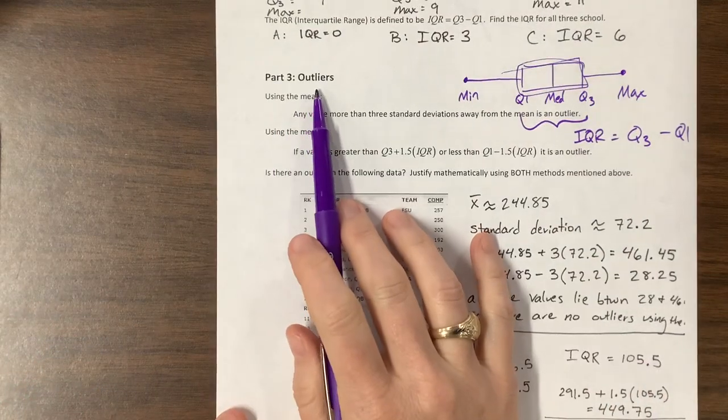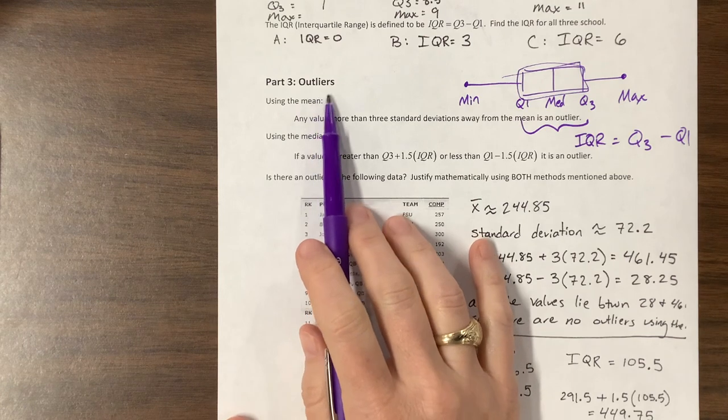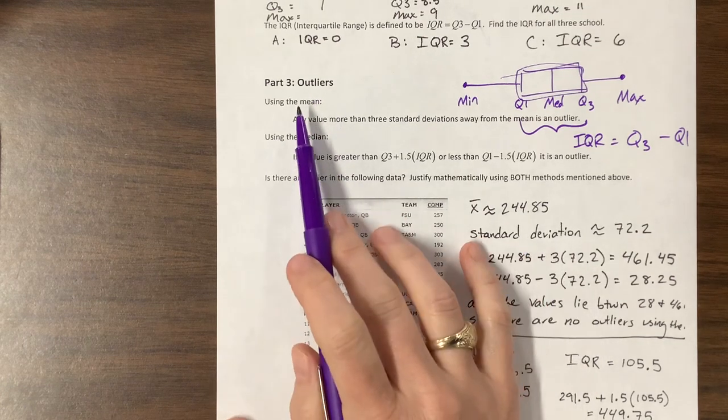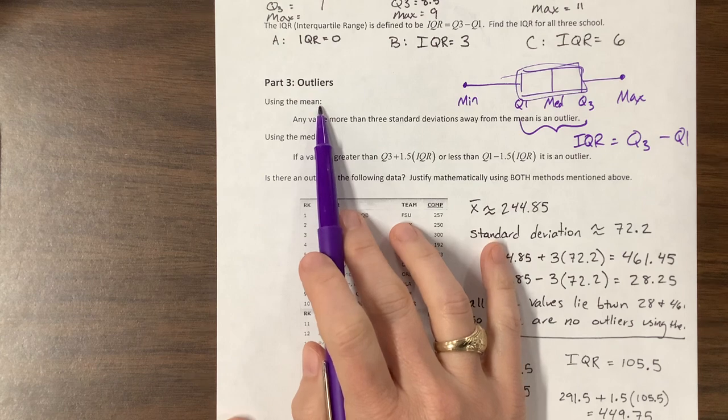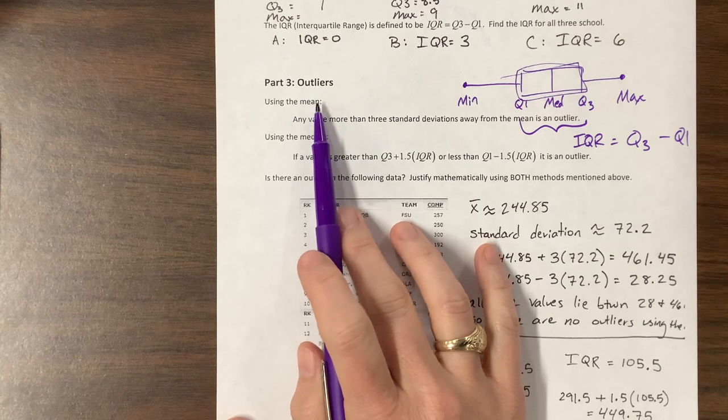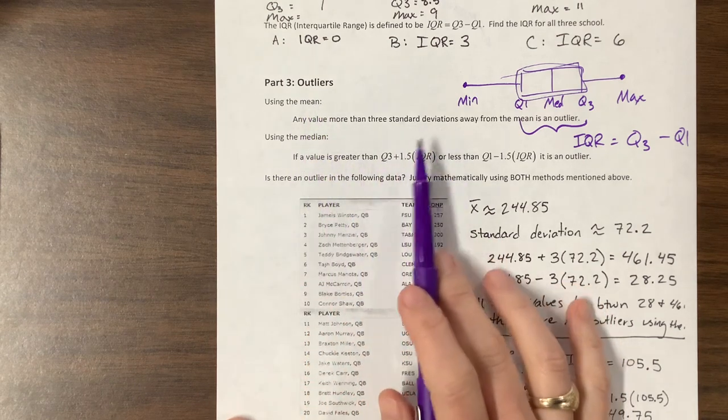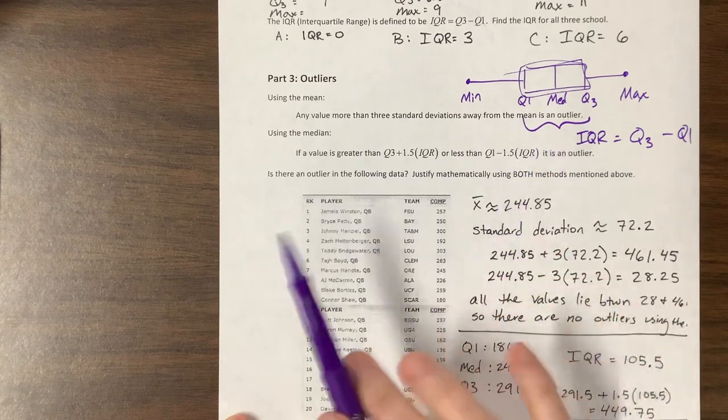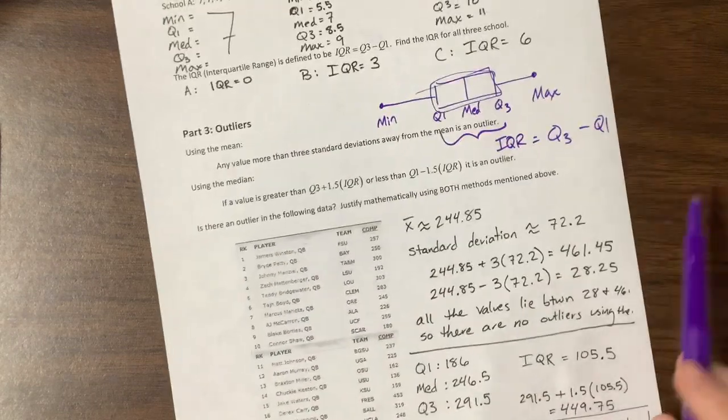So we have two ways to determine if something is officially an outlier, and one of them is using the mean. So if we find a value that is more than three standard deviations away from the mean, then it's an outlier. Sorry, I started writing on top of this.